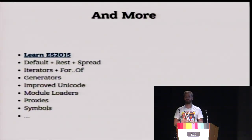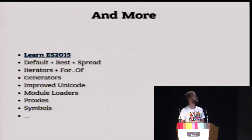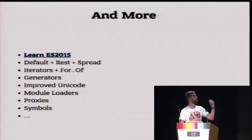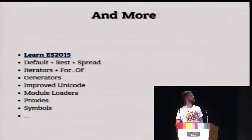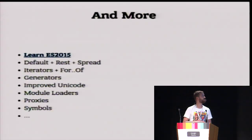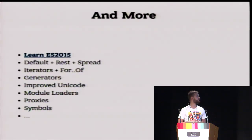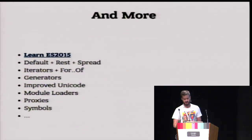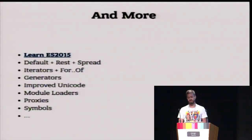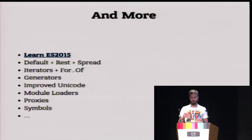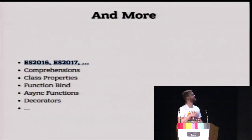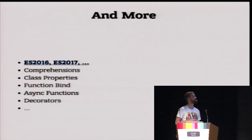That's not all the features of ES2015 — there are more, and I'll post my slides so you can check them all. There are also iterators, generators, improved Unicode, proxy symbols, and promises. The most exciting part is that ECMAScript changed how it uses standards. In the next year there would be ES2016, then ES2017, and new features would be shipped to the standard language every year.